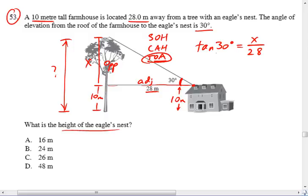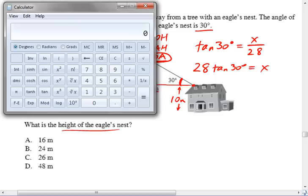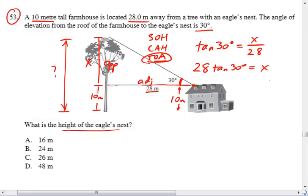If I multiply both sides of the equation by 28, I get 28 times the tangent of 30 degrees is equal to x. And then I can grab my calculator here. Make sure you're in degree mode. 28 times the tangent of 30 degrees is 16.1658 et cetera, so I'm just going to round that to 16.2 meters.